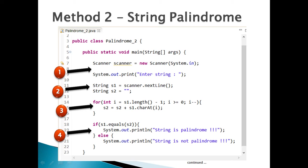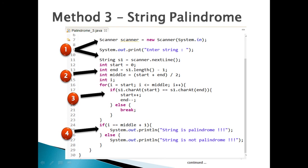Step 4: the final check is to compare string s1 with s2 using the equals() method. If s1 and s2 come out to be equal then string s1 is a palindrome; otherwise s1 is not a palindrome.